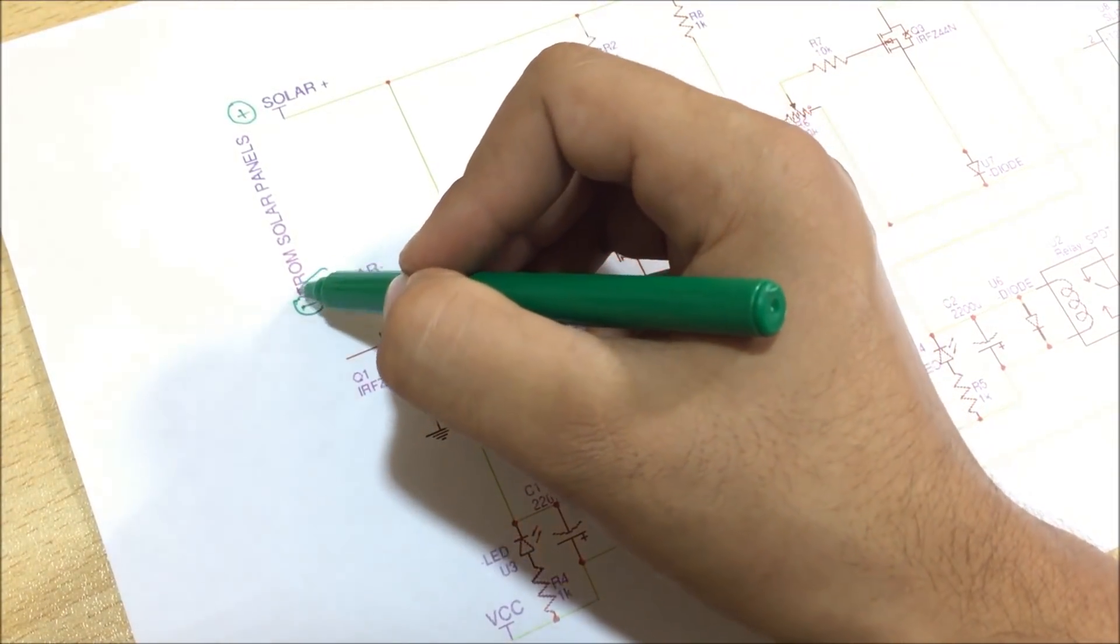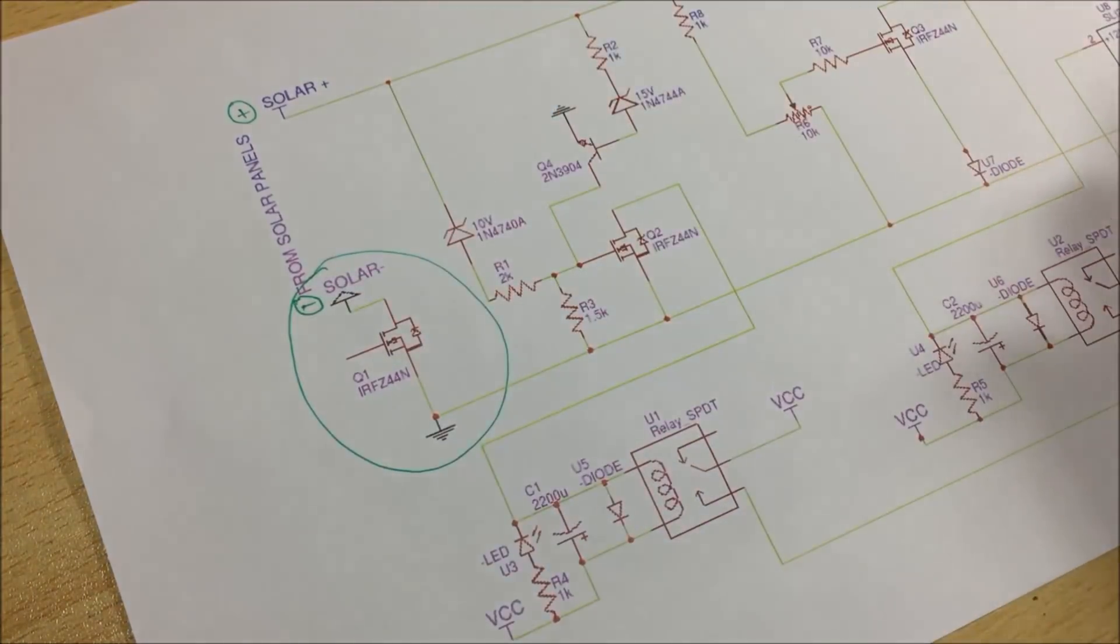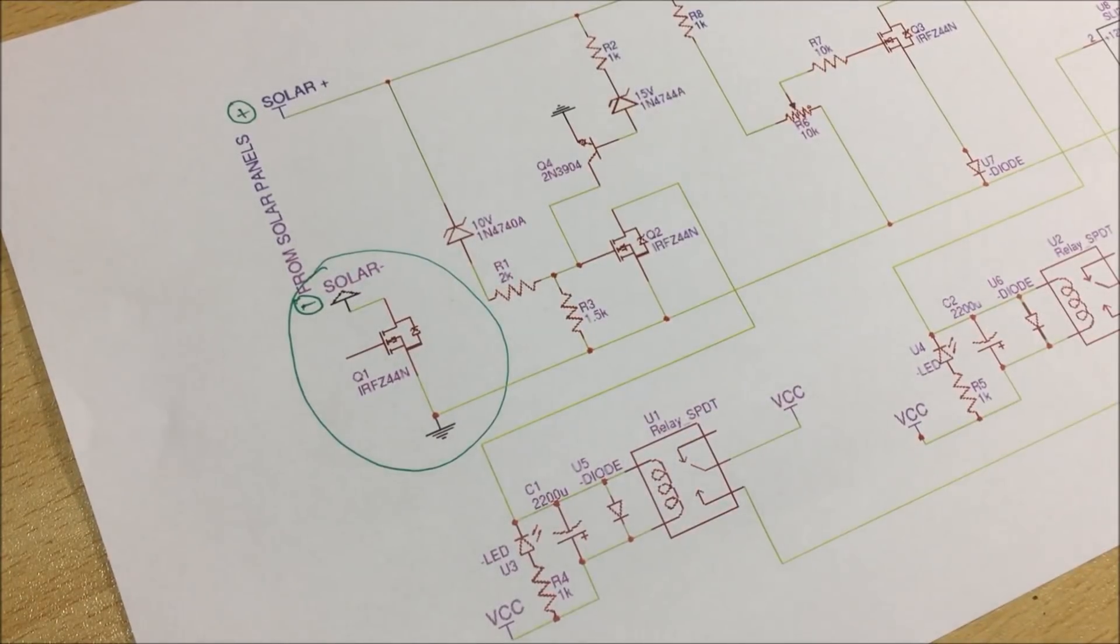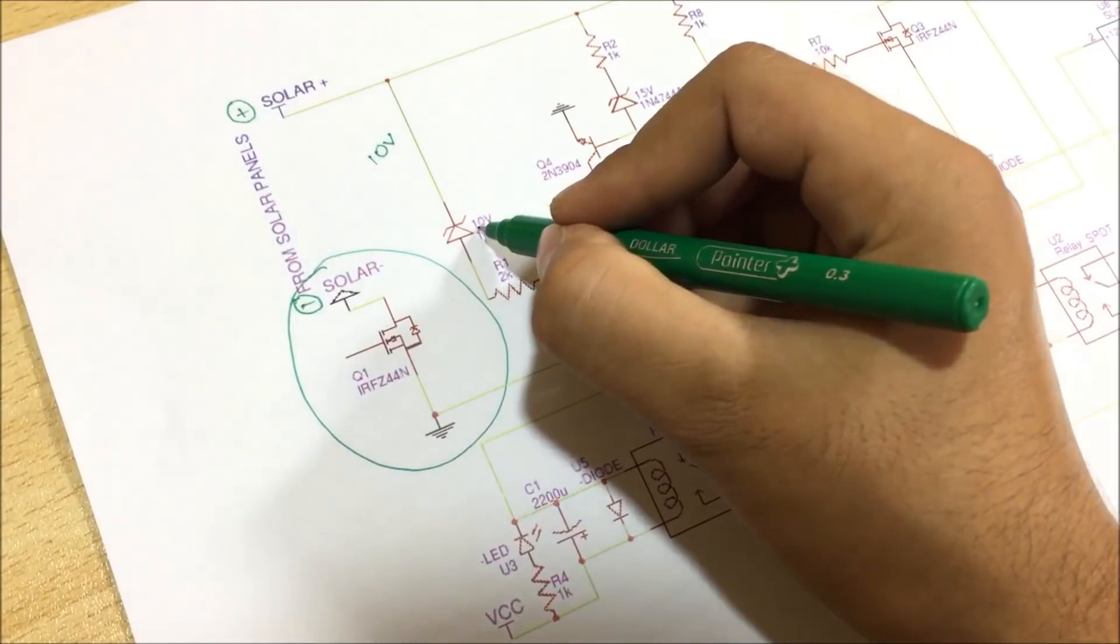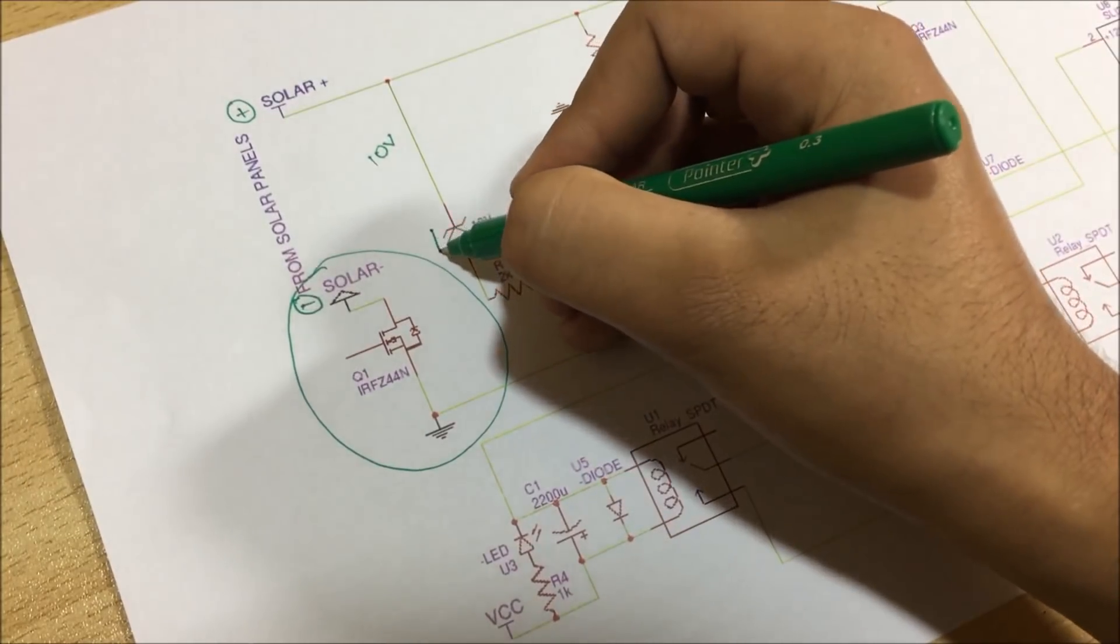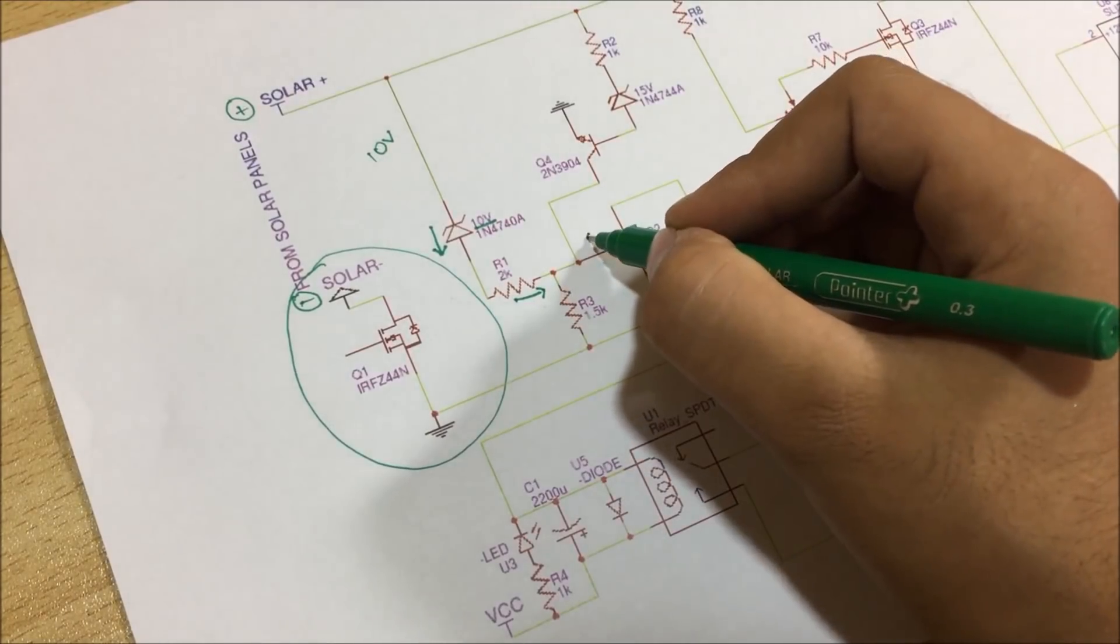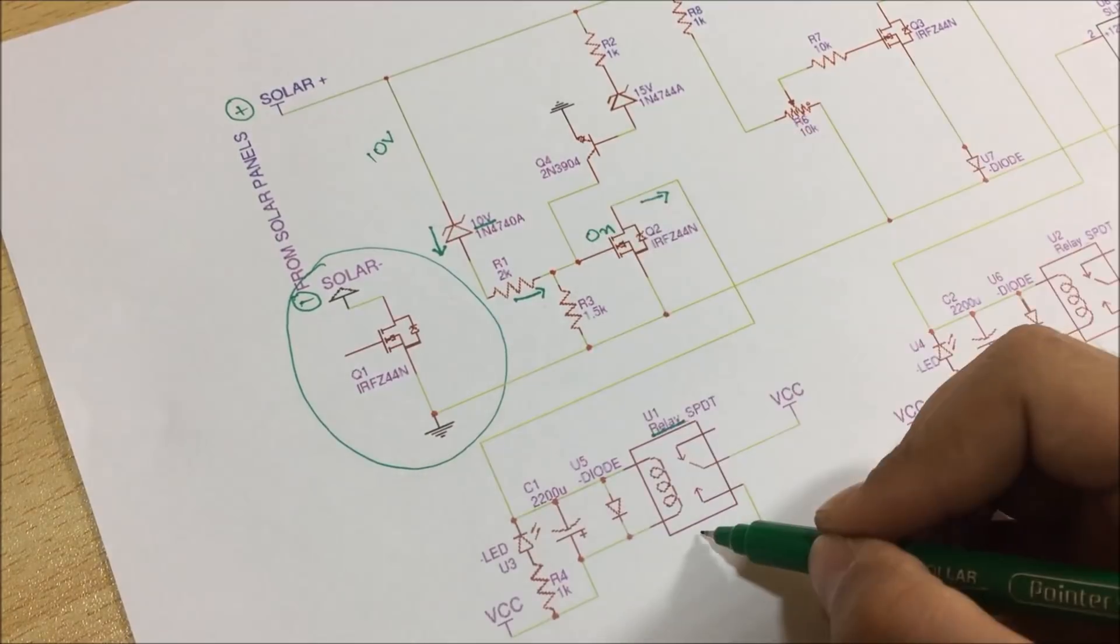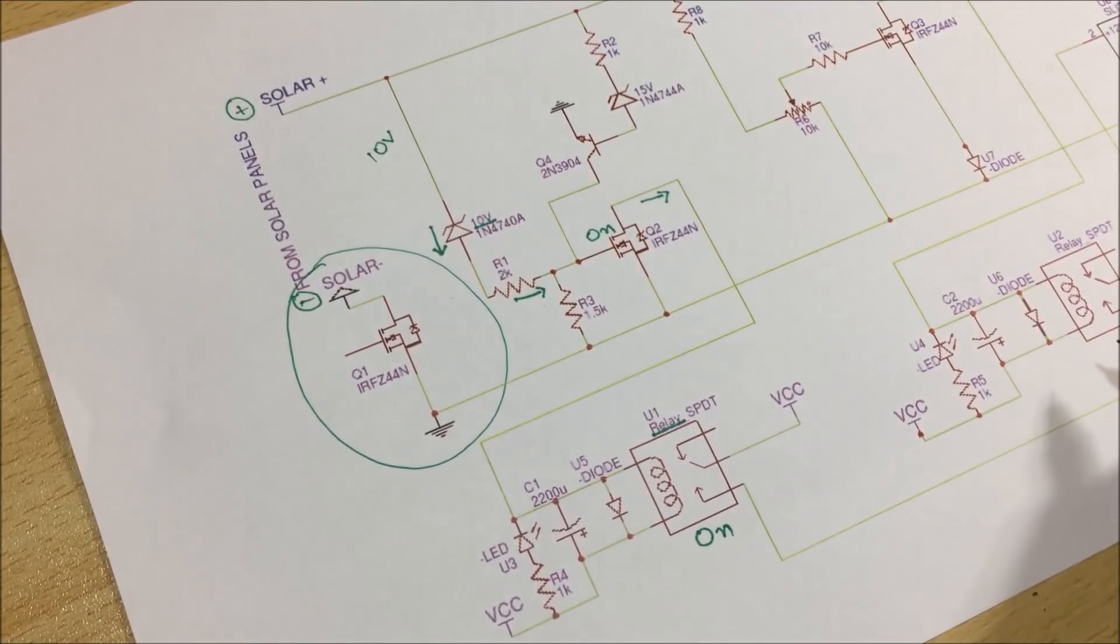The first part of the circuit is just a simple N channel MOSFET in a forward bias condition to stop the flow of current from the battery to the solar panels. During the sunrise, whenever the panel voltage reaches 10V, this 10V zener diode starts conducting and turns on the MOSFET which ultimately turns on the relay. This is known as low voltage protection.